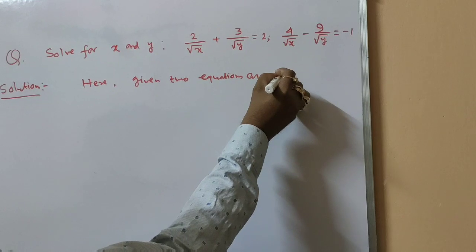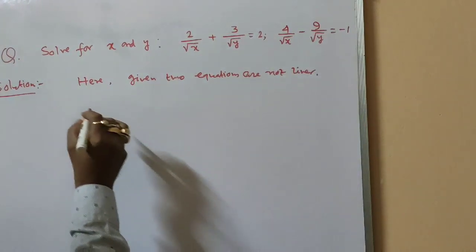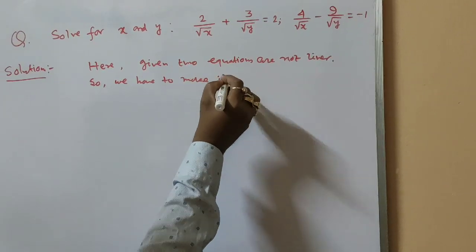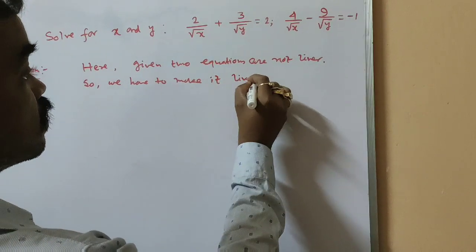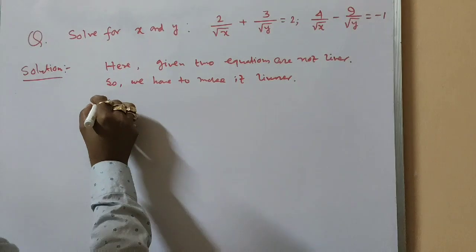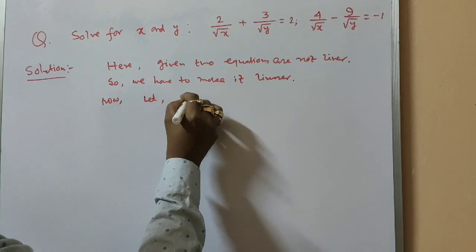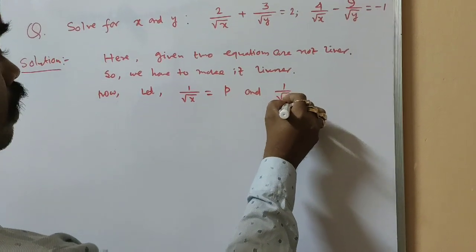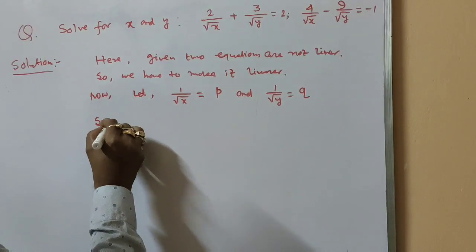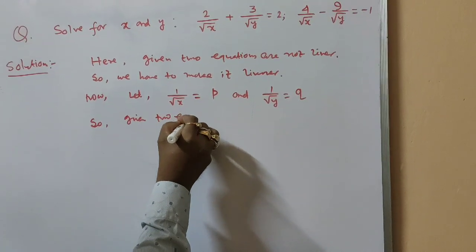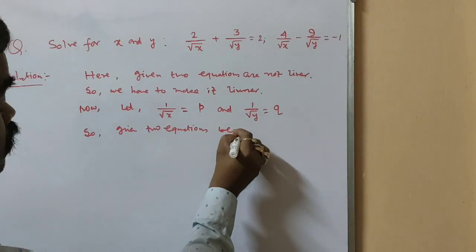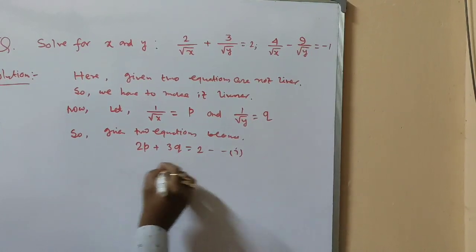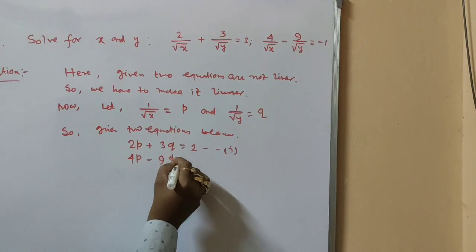The given equations are not linear, so we have to make them linear. Let 1 by root x equal to p and 1 by root y equal to q. The given two equations become: 2p plus 3q equal to 2, and 4p minus 9q equal to minus 1.